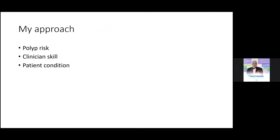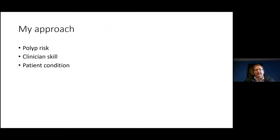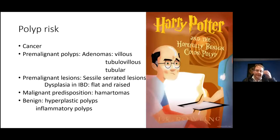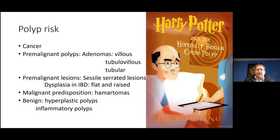I'm going to give you my approach, and with that we'll start off by looking at a small classification of polyps. Prof Hale is going to go into those a little bit more. Pre-malignant polyps are really divided into adenomas — tubular villous and tubular adenomas. There are pre-malignant lesions like serrated lesions, dysplasia in IBD, and pre-malignant predispositions such as hamartomas. Your benign conditions you can basically leave behind.